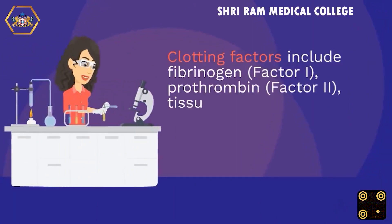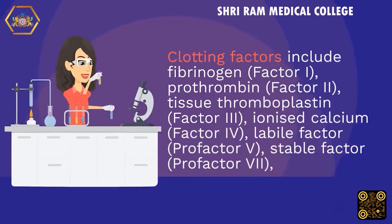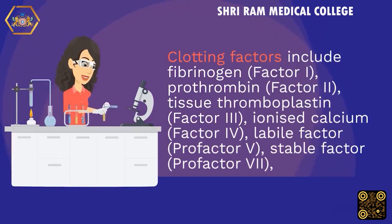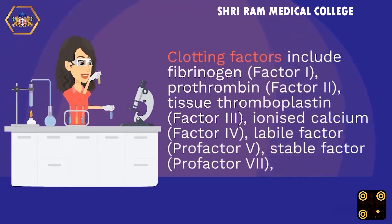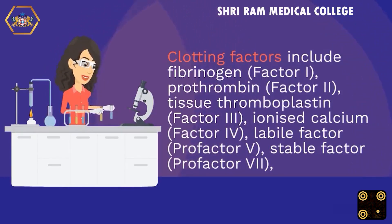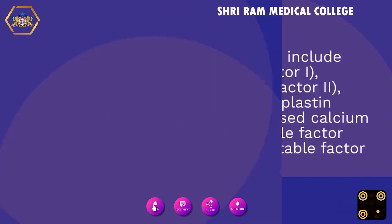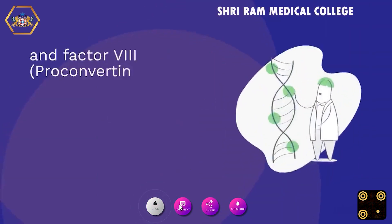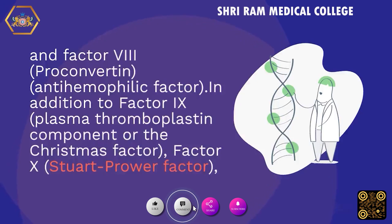Clotting factors include fibrinogen (Factor I), prothrombin (Factor II), tissue thromboplastin (Factor III), ionized calcium (Factor IV), labile factor or pro-factor V, stable factor or pro-factor VII, and Factor VIII, also known as proconvertin and anti-haemophilic factor.